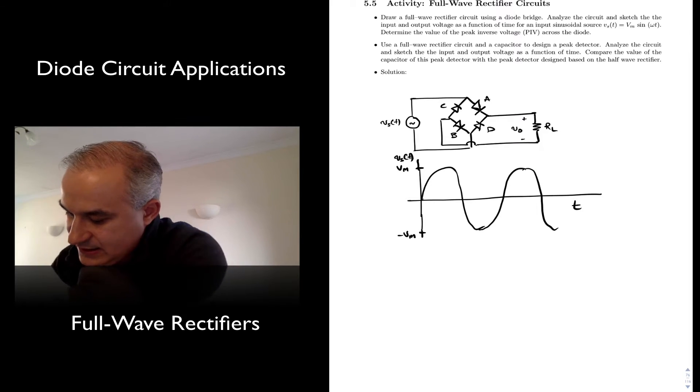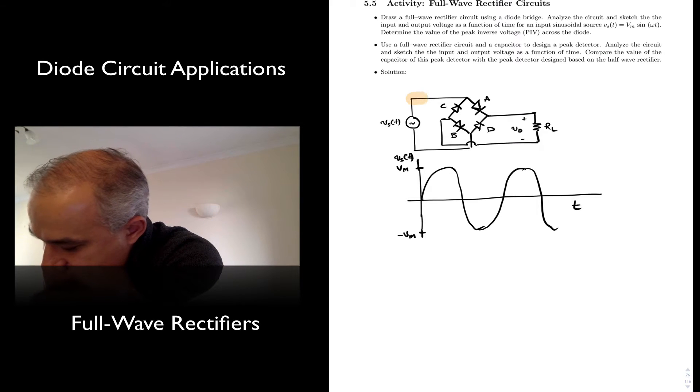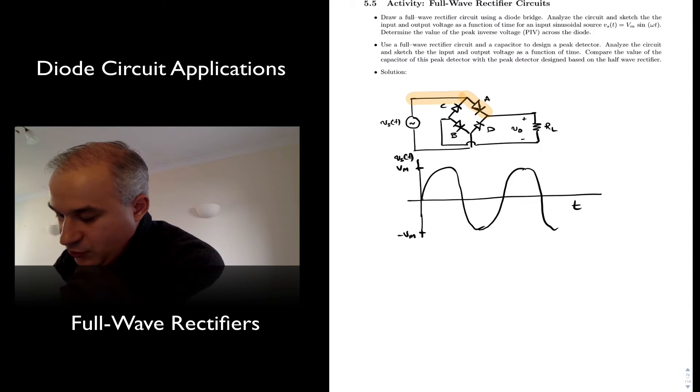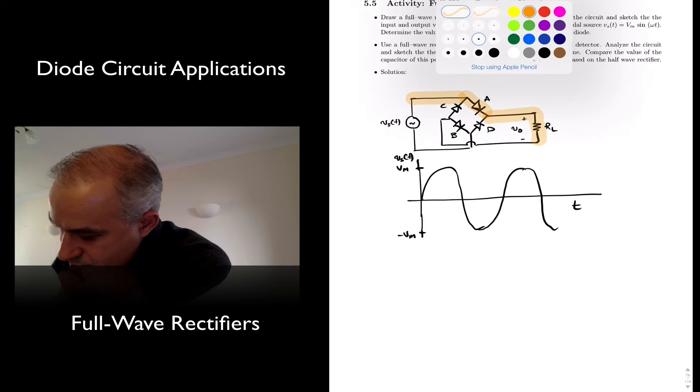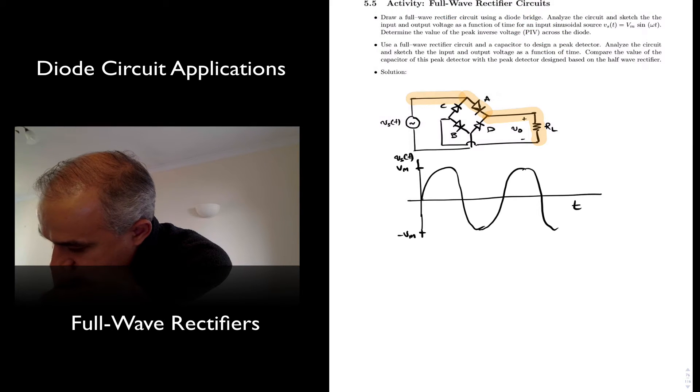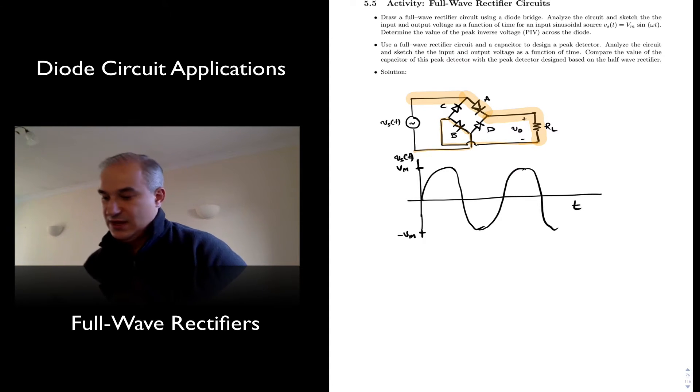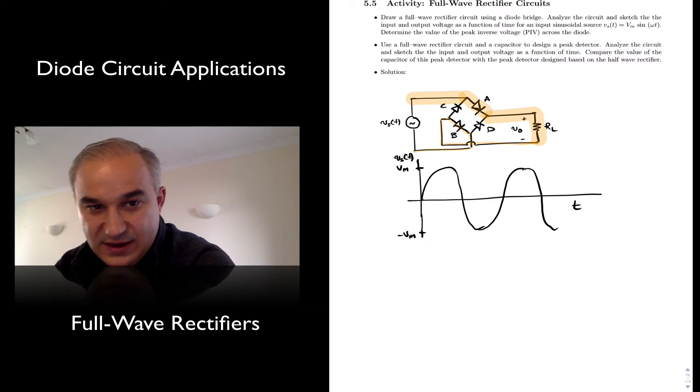Now, what happens is that when the voltage is positive, this diode is going to conduct. So we have a diode drop there. Current goes to the load. And then goes back here. And this also conducts. That's the path, right?